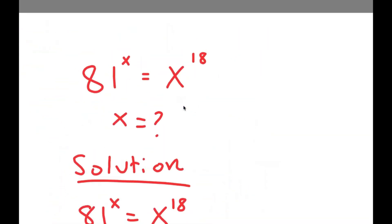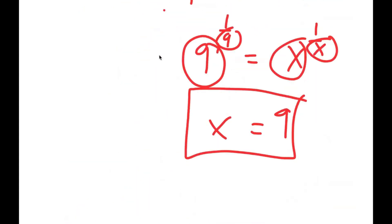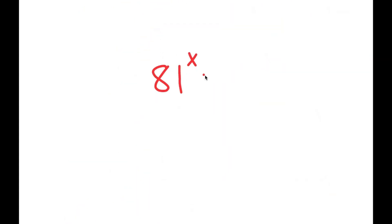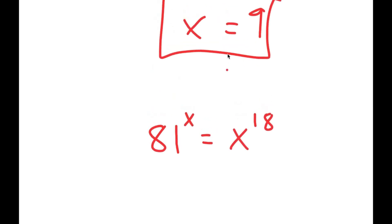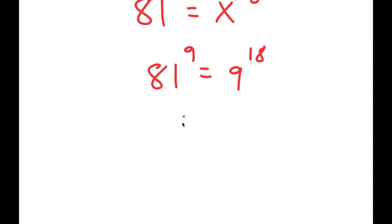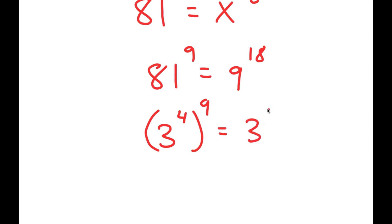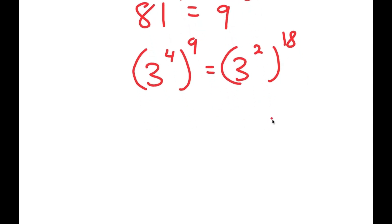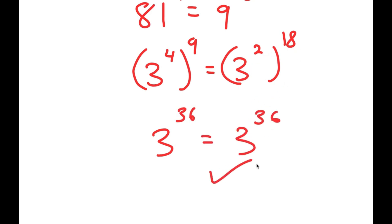Going back to the original equation to check: 81 to the power of x equals x to the power of 18, and x equals 9. Plugging in, I get 81 to the power of 9 is equal to 9 to the power of 18. Now 81 is the same as 3 to the power of 4, and 9 is the same as 3 squared. So I get 3 to the power of 4 to the power of 9 equals 3 squared to the power of 18. That gives 3 to the power of 36 on the left, and 3 to the power of 36 on the right. So this is correct.